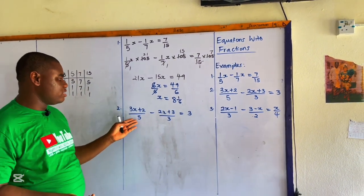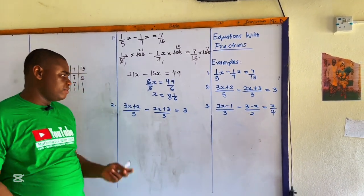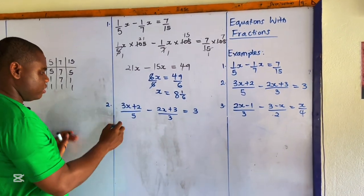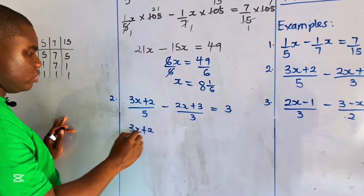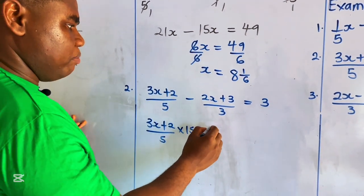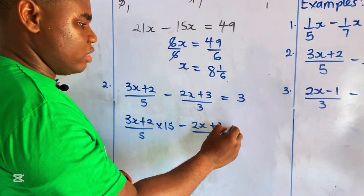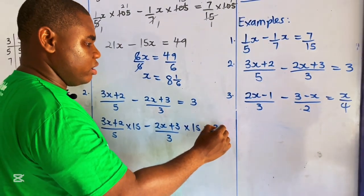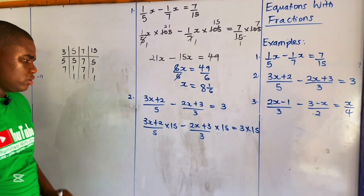The reason we don't need further calculation is that 5 and 3 are two prime numbers, so their LCM is just 5 times 3, which is 15. Multiplying everything by 15: (3x plus 2) over 5 times 15, minus (2x plus 3) over 3 times 15, equals 3 times 15.